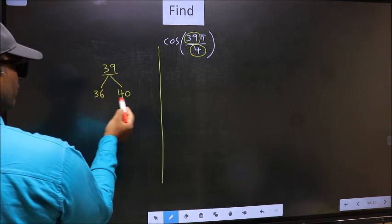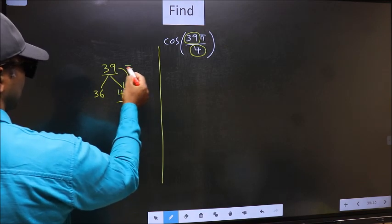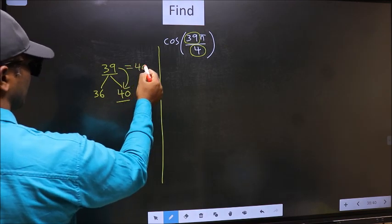39 is close to which number? This is close to 40. So now you should write 39 as 40 minus 1.